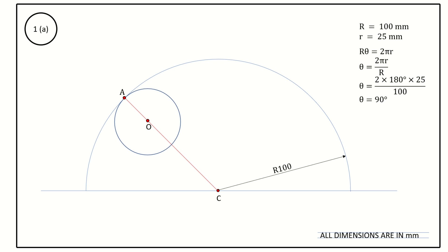Take a protractor, keep it on the COA line with reference point as C. Measure 90 degrees and draw a line joining the arc at another point A. The arc length AA equals the circumference of the smaller circle — since we cannot measure AA using a scale, we go for angular measurement: θ equals 90 degrees.